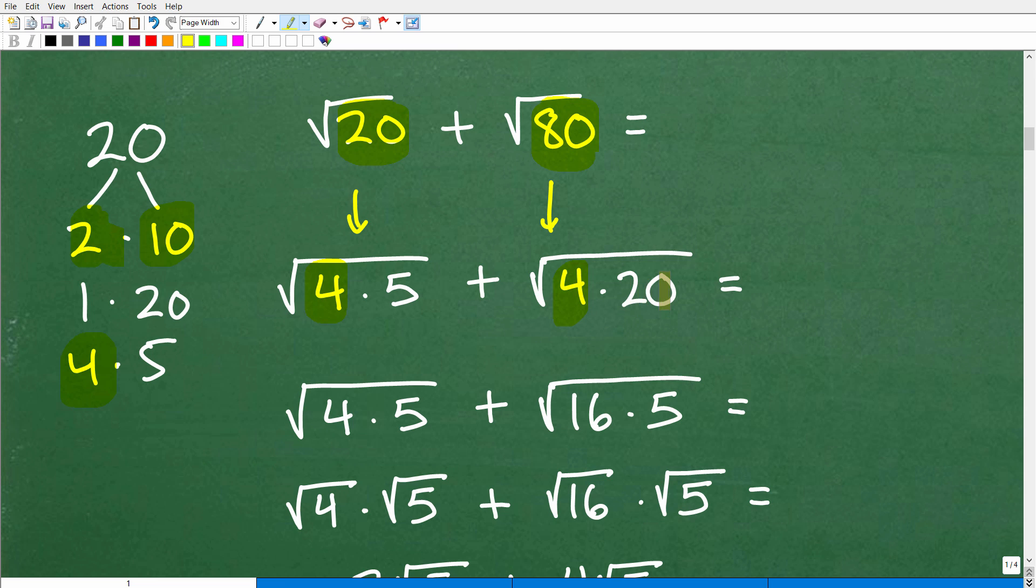But you're thinking about like, well, 20 is the same thing as 4 times 5. So now I have 4 times 4. So you could write 80 as 16 times 5. So the way you really want to rewrite these numbers is try to find the largest perfect square factor.